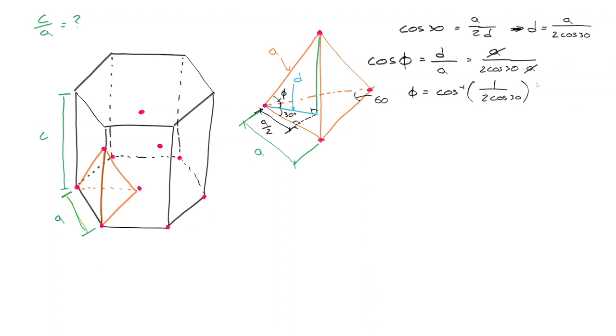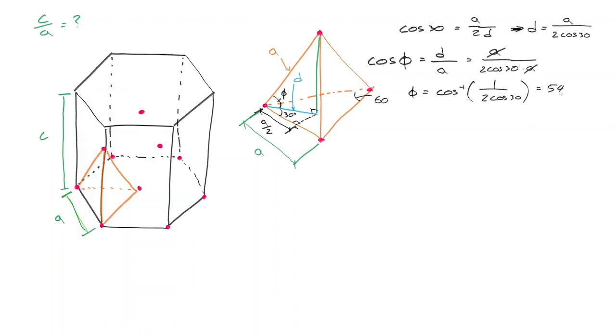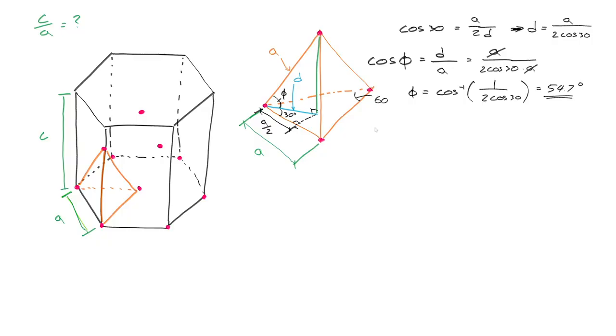Let's get a calculator here. So we got 30 cos of that, 2 times, take 1 over that, cos inverse, and that's 54.7 degrees. You might recognize this because that's half of 109.5, which was the bond angle in methane that I talked about in my other video. That's gonna be really useful to us in just a moment.